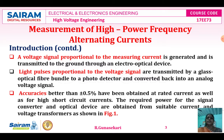A voltage signal proportional to the measuring current is generated and transmitted to the ground through an electro-optical device. Light pulses proportional to the voltage signal are transmitted by a glass optical fiber bundle to a photodetector and converted back into an analog voltage signal. Accuracy of plus or minus 0.5 percentage has been obtained at rated current as well as for high short circuit currents.